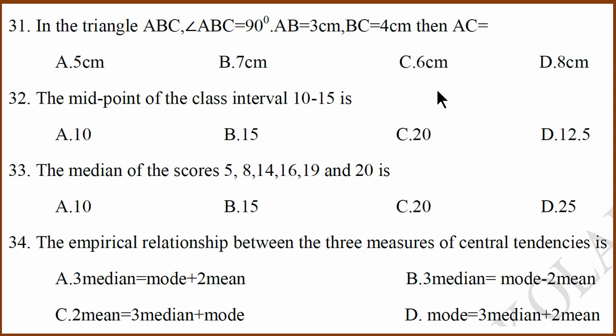31st question. It's a right angle triangle ABC. AB is 3 cm, BC is 4 cm. What will be AC? This is a standard right angle triangle. Pythagorean theorem: hypotenuse square is sum of other two sides squared, which means it is 5 cm.